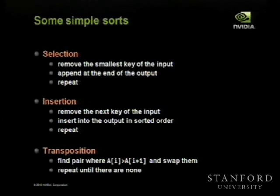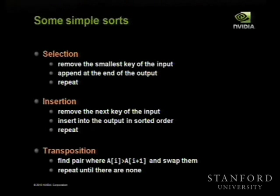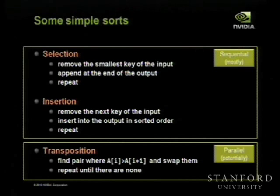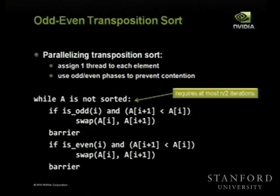Another simple sort — of which bubble sort is essentially a version — is transposition. You look at your sequence and find a pair of adjacent elements that are out of order where A[i] is bigger than A[i+1], and if you find any such pair, you just flip them. If you keep doing that until there are no inverted pairs, you're done. Bubble sort is a particular strategy that scans through the list sequentially and keeps doing that until there are none.